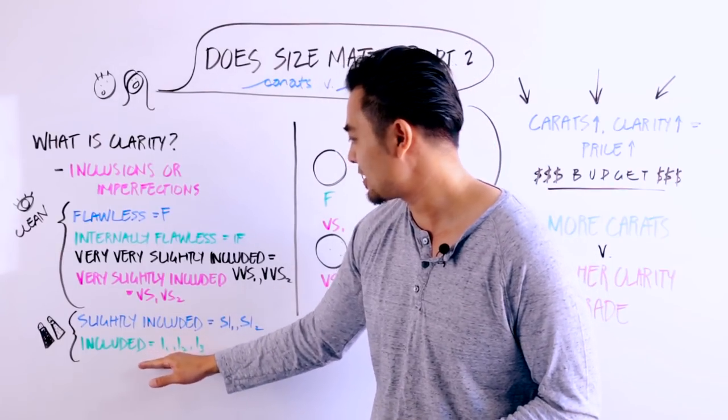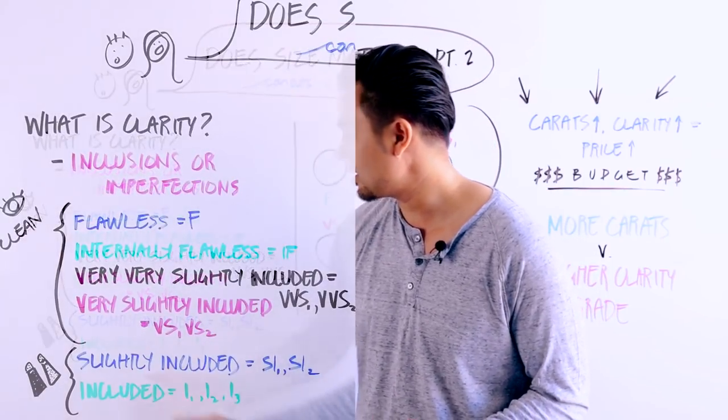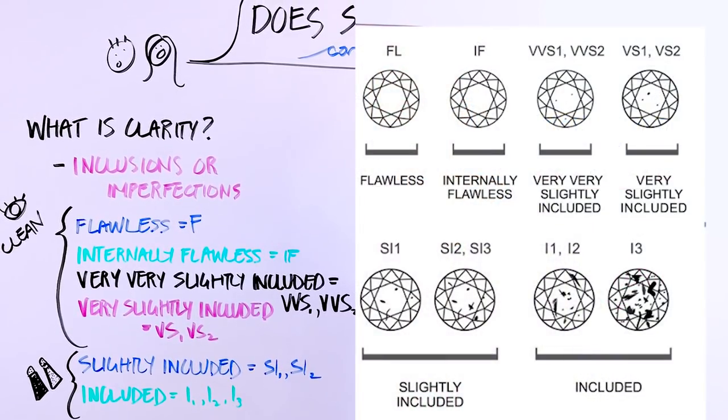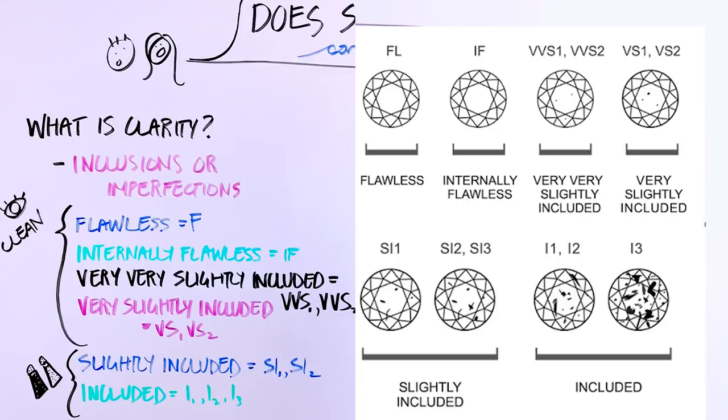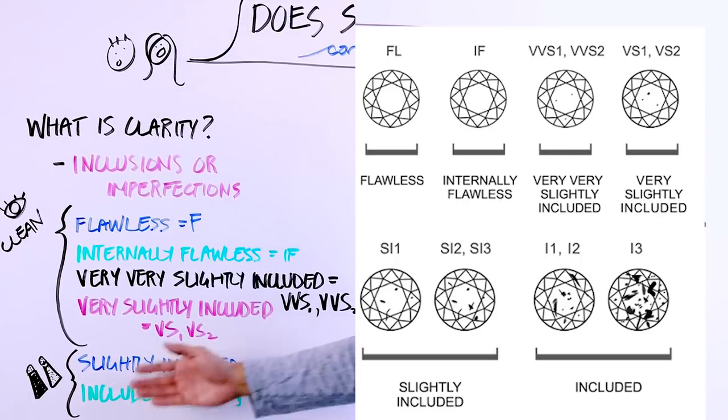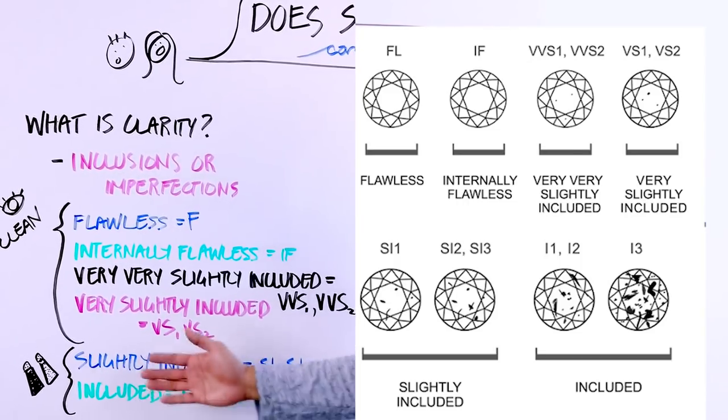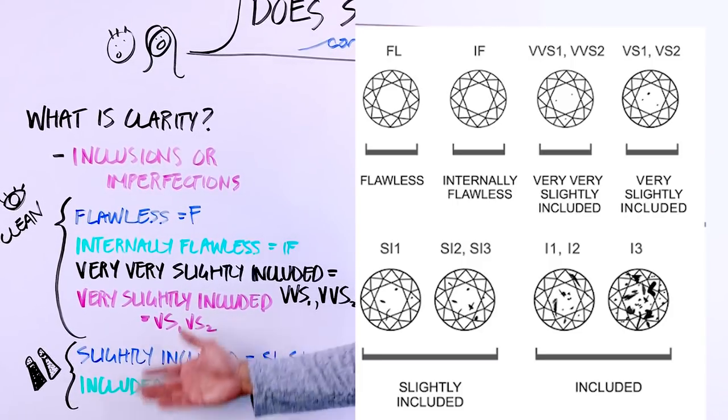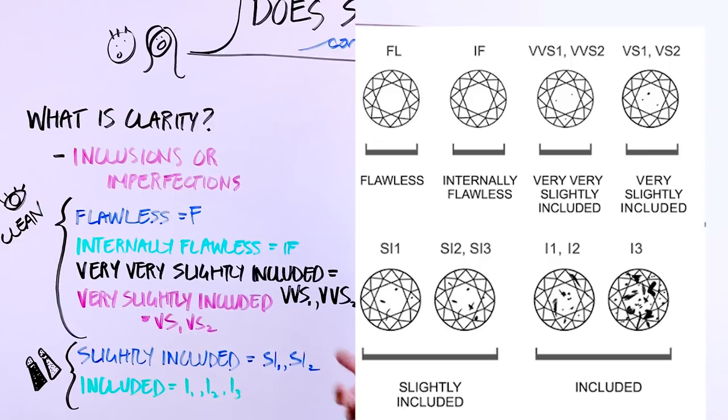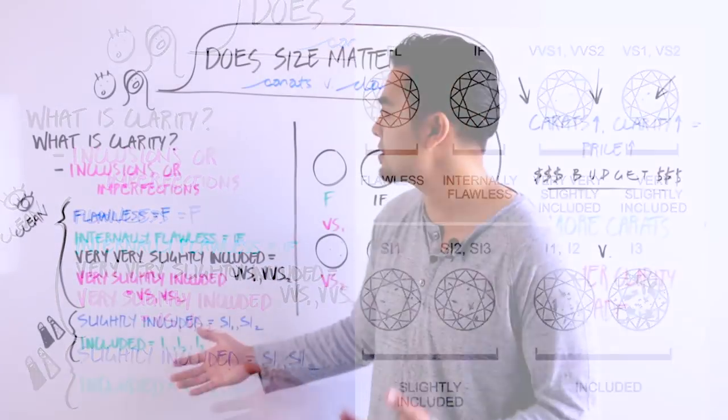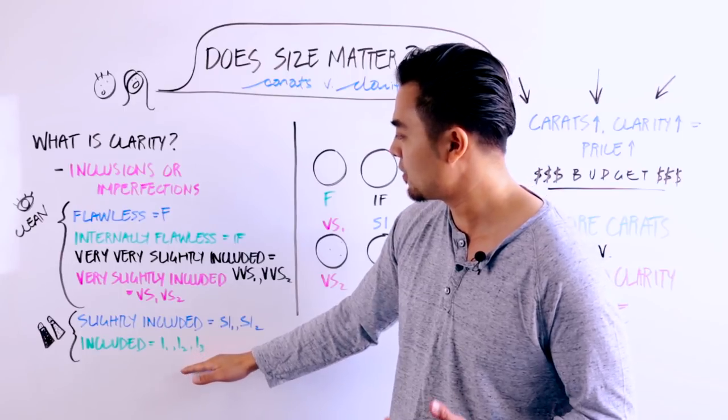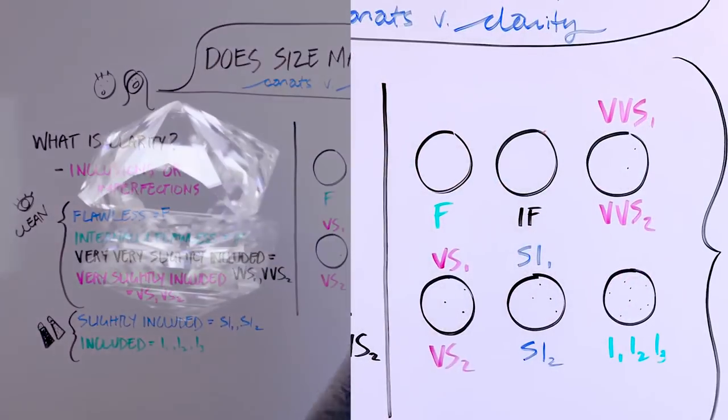So if it's slightly included to included, then that's where you'll be able to notice it a bit more. The imperfections are a little louder. The inclusions are more visually there. And usually they call it salt and pepper. And a lot of people actually like the slightly included as well as the very included gemstones as well because of the salt and pepper look. So it just depends on your taste. There's no real right or wrong answer here. It's just we're explaining the clarity grade from very heavily included to basically a flawless stone.